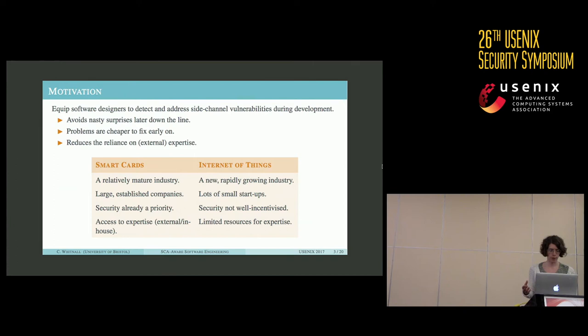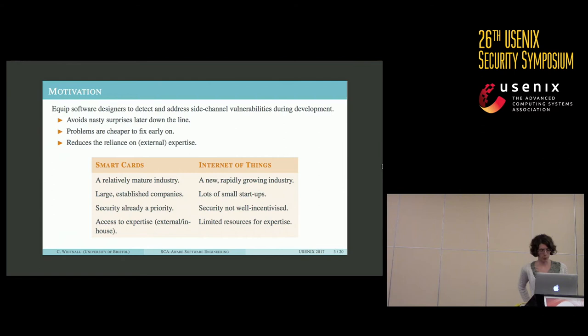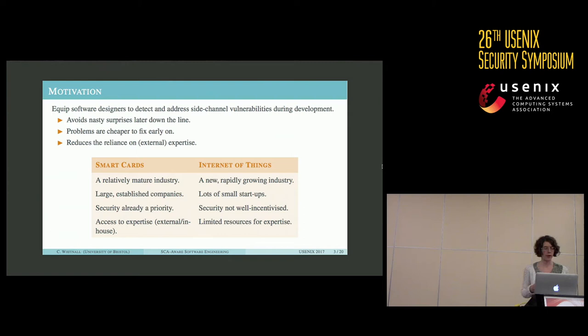What we've been aiming towards is the goal of equipping software designers to detect side channel vulnerabilities in the development stage. This would hopefully help avoid nasty surprises later down the line and provide an opportunity to make security-enhancing adjustments while it is still relatively cheap and easy to do so. We suggest that such a facility would be especially useful in the context of the growing Internet of Things sector, which is fast moving and populated by lots of small startups with minimal resources. Chip manufacturers, for example, are typically large and well established, used to designing and testing with cryptographic and physical security in mind, with resources to afford evaluation labs or even in-house expertise.